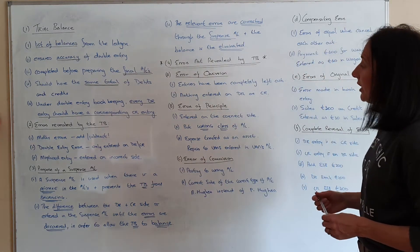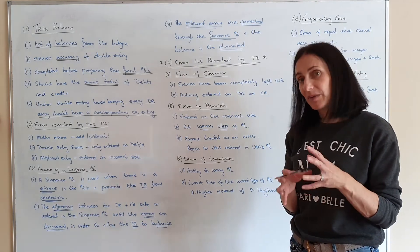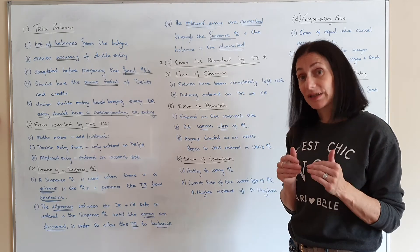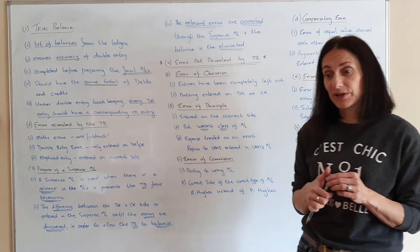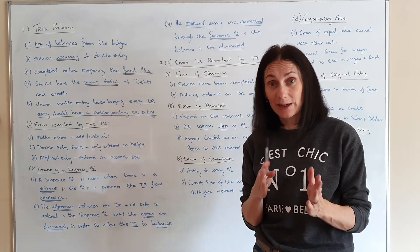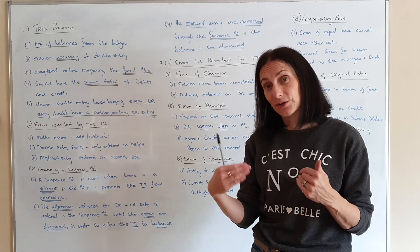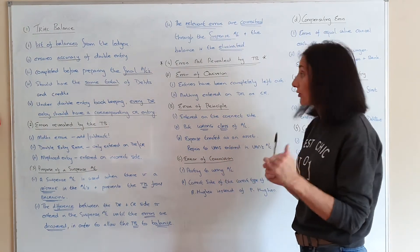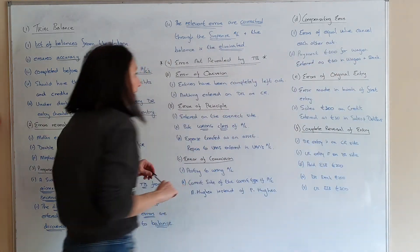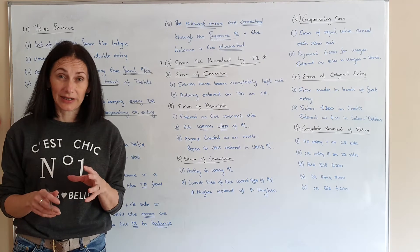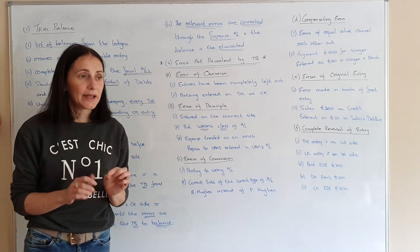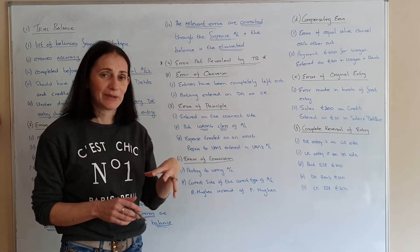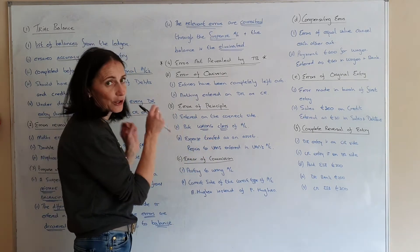Number four: errors that will not be shown up by the trial balance. This means you have made mistakes in your accounts but your trial balance is still balanced — so you think your accounts are perfect but there are still mistakes. The debit and credit side add up but they're actually not correct. There are six entries that would cause accounts to be incorrect even though the trial balance balances. You have to be able to name these, explain them, or they could give you the names and ask you to explain — so these have to be learned off by heart.